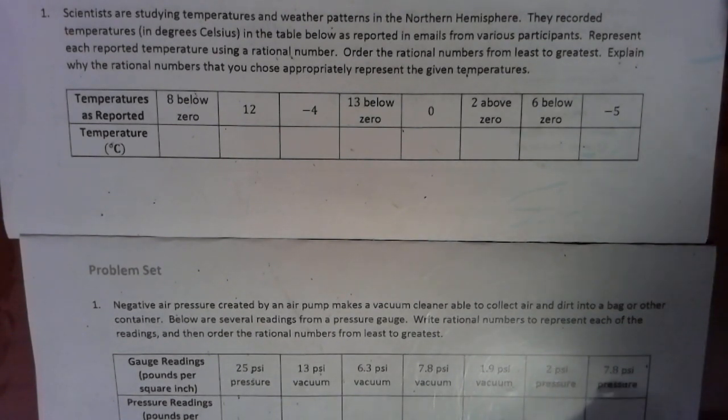So it says, scientists are studying temperature and weather patterns in the northern hemisphere. They recorded temperatures in degrees Celsius in the table below as reported in emails from various participants. Let's represent each reported temperature using a rational number,